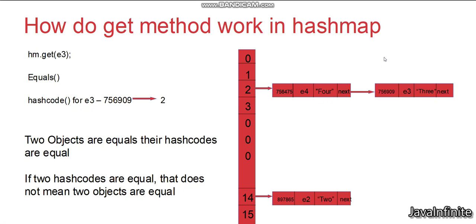That's it about HashMap — the put method, get method, insertion of duplicate keys, insertion of null keys, and how get method works. In the next video, we will see what happens when we don't override equals and hashCode, and how HashMap behaves in that case. Thank you, and please do subscribe.